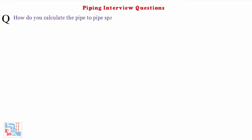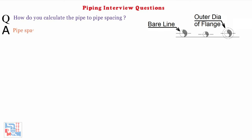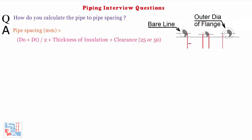Next: how do you calculate the pipe-to-pipe spacing? Pipe spacing in mm equals DO (OD of small size pipe in mm) plus DT (OD of flange of large size pipe in mm) divided by 2, plus thickness of insulation in mm, plus clearance — that is 25mm in case of flanged pipe or 50mm in case of non-flanged pipe. Remember this is the minimum distance required and actual distance should be equal or higher.